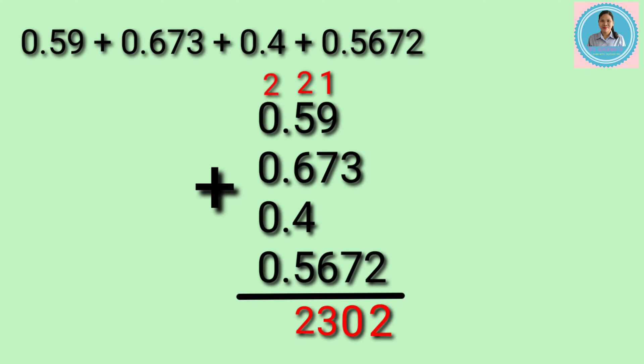Last, add the digits in the ones place: 2 plus 0 plus 0 plus 0 plus 0 equals 2. Then put the decimal point in the sum directly below the decimal point of the addends. So, the answer is 2 and 2,300 ten-thousandths.